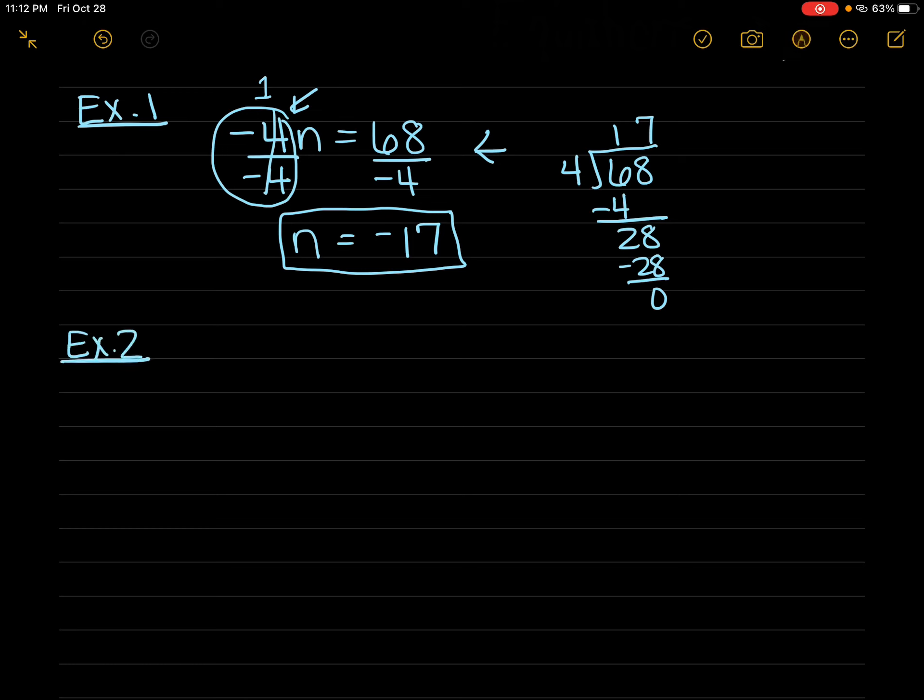Example 2 is n divided by -3 = -15. Same thing again. This is n divided by -3. So we're going to do the opposite and multiply by -3.